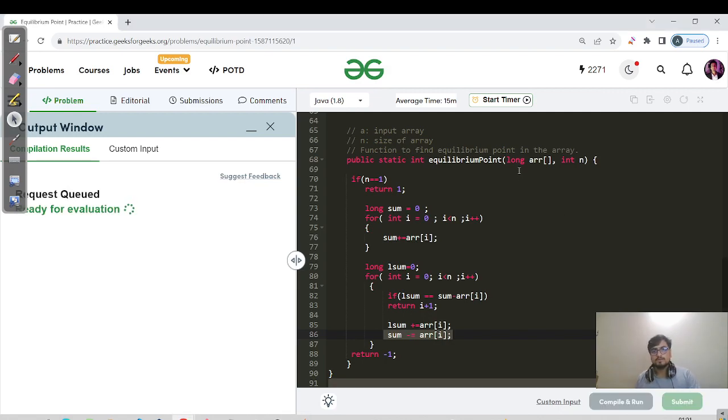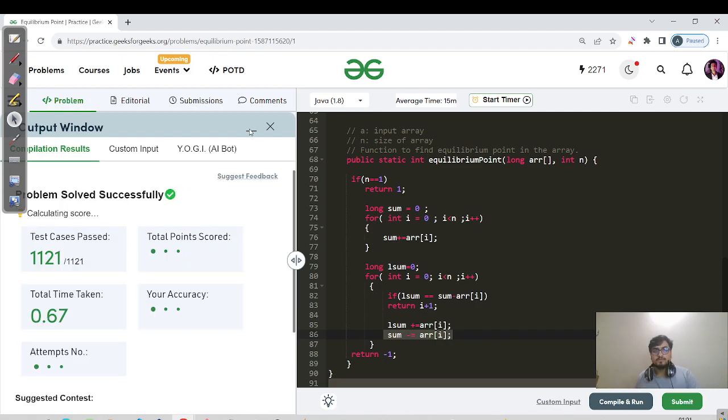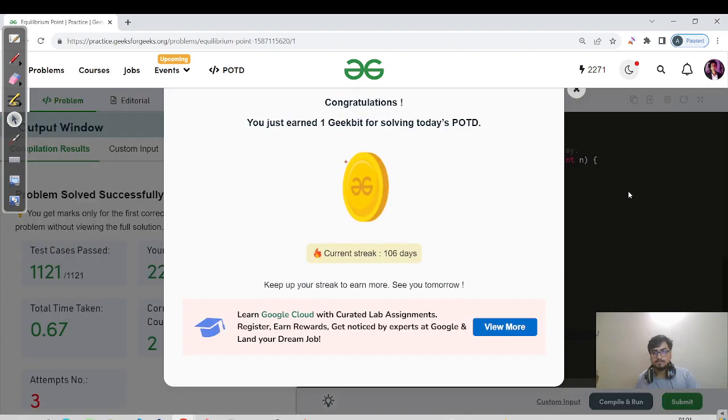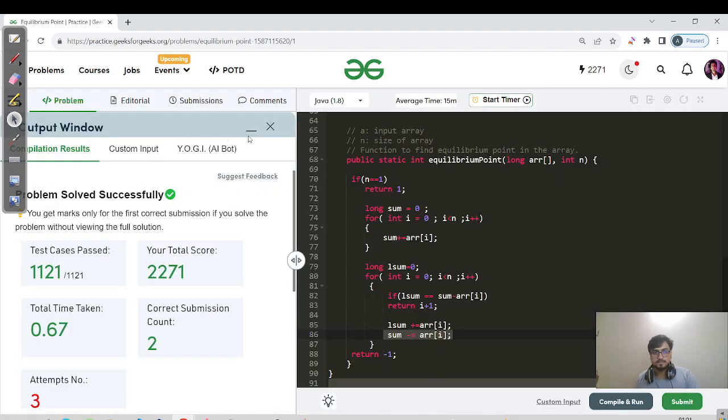Let us now hit the submit button for this code as well. So definitely the solution is coded in O(n) and space complexity is O(1), and n is pointing to 10^5 according to constraints, so that is why this solution got submitted and we are done with our day 106.